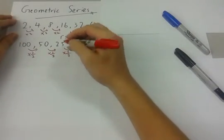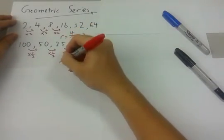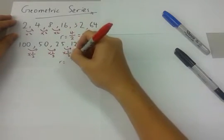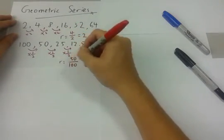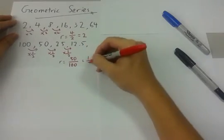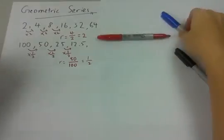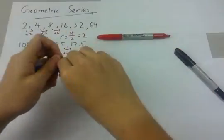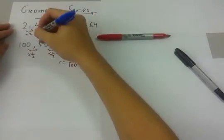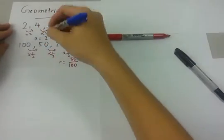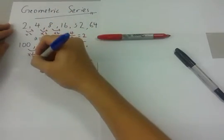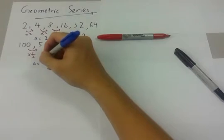As you can see, applying the ratio formula using 50 over 100, we get 1/2. Before we continue, I would like to say that the first term is A. It's equal to 2 for the first example and the second is 100.